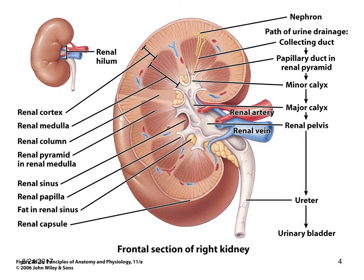The nephrons, roughly around 1.2 million per kidney, filter the blood plasma and this filtrate is altered to form urine. The path of urine drainage begins in the collecting duct, goes through the papillary duct in the renal pyramid towards the minor calyx, then the major calyx, and enters the renal pelvis — from there into the ureter and then into the urinary bladder until it is evacuated or voided.